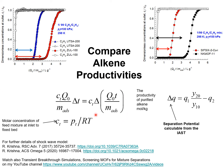So, the breakthrough experiments can be simply analyzed to determine the productivities of purified alkene. This simple approach works only if the desired product is recovered during the adsorption phase of the separation. For separations in which the desired product is recovered in the desorption cycle, the procedure is more complicated and I will take that up in a future presentation.